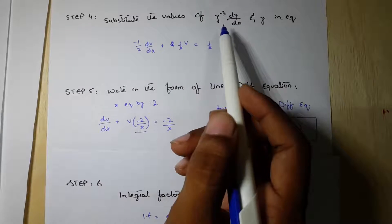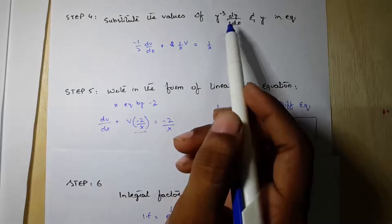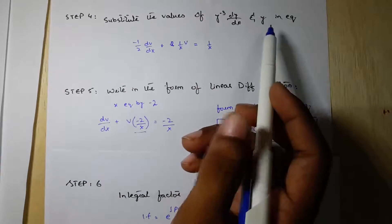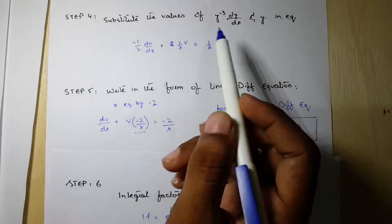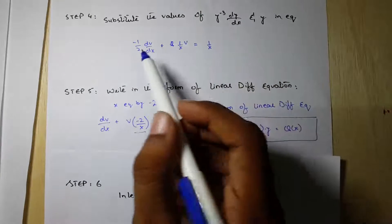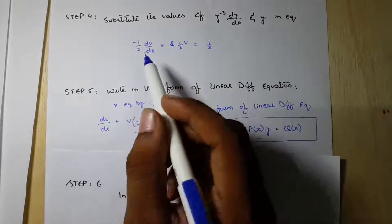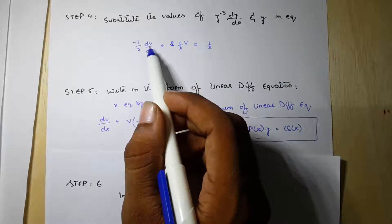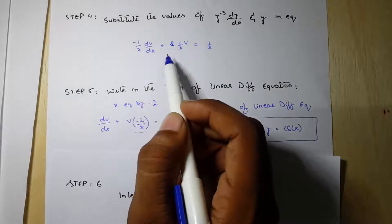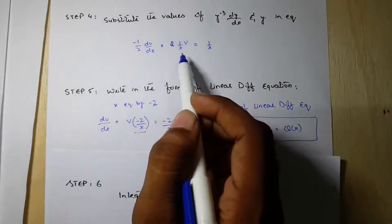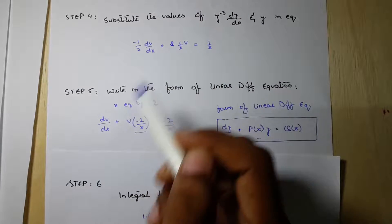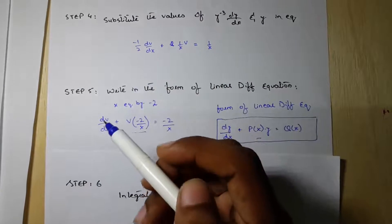Step 4: substitute the value of y^(−3) dy/dx and y^(−2) into equation number 1. Our equation becomes minus (1/2) dv/dx plus (1/x)v equal to 1/x.